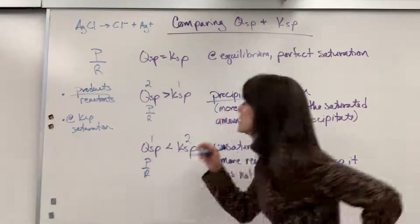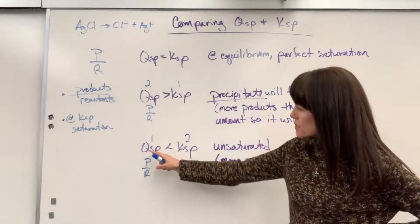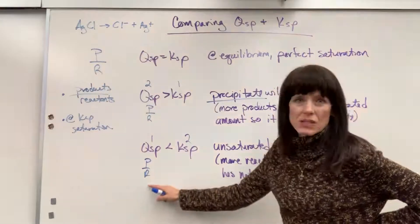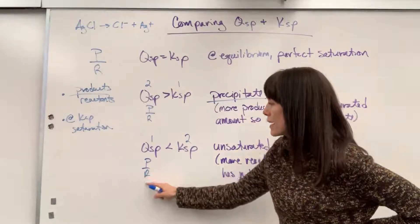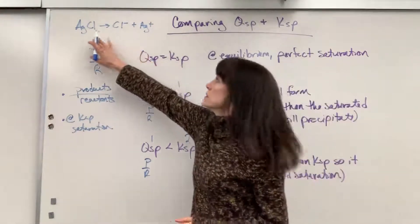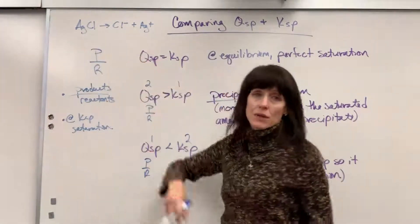Products over reactants. I'm thinking, okay, if this number, QSP is less than two, that means I must have a bigger denominator. I must have more reactants for this number to be smaller. So then I come back to this idea. Solid produces those aqueous ions.